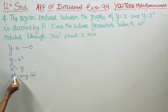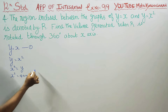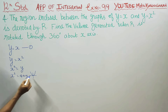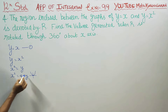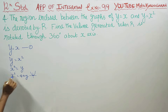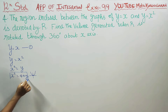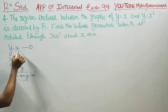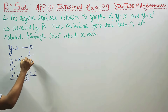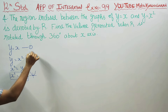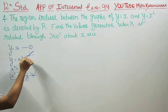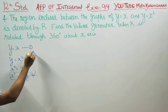The parabola y = x² is symmetrical about the y-axis and passes through the origin. Similarly, y = x is a straight line passing through the origin. It is the same origin point that both graphs share.